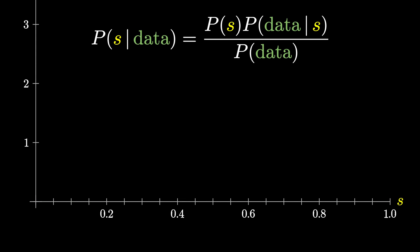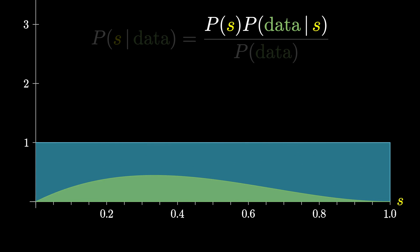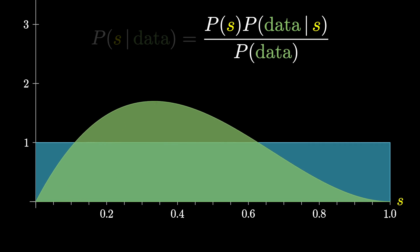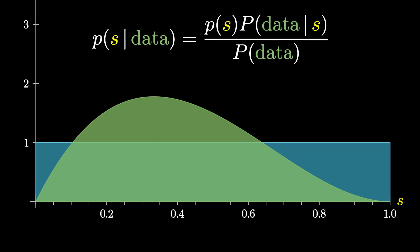As to Bayes' rule, it still looks identical to what we did before. You take your prior probability density function, multiply it by the probability of seeing the data for a given value of S, and then divide it by the total probability of seeing the data — whatever constant it takes to make sure that the area under the curve is 1. This gives us the posterior: the distribution representing your belief after seeing data.